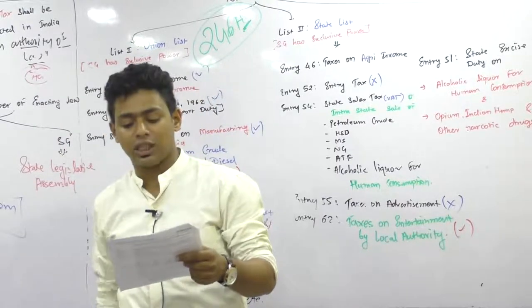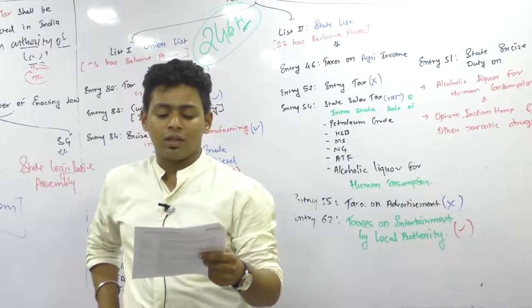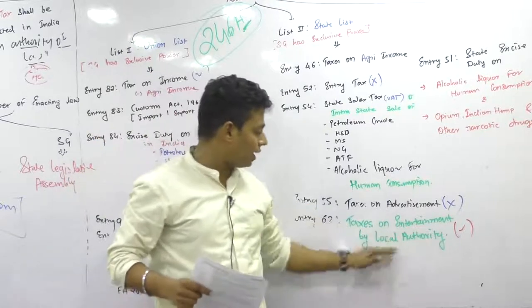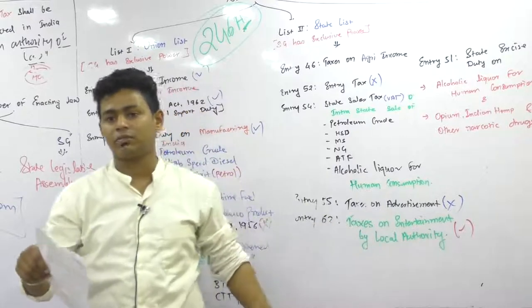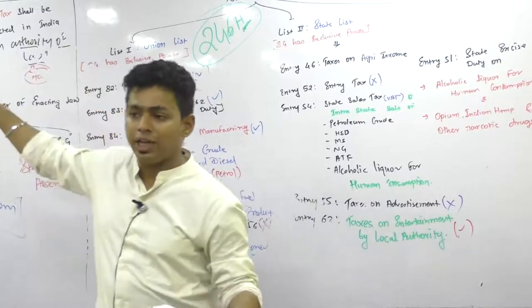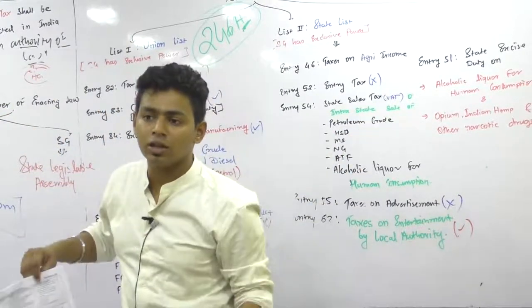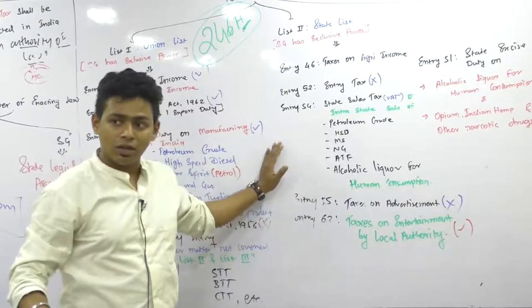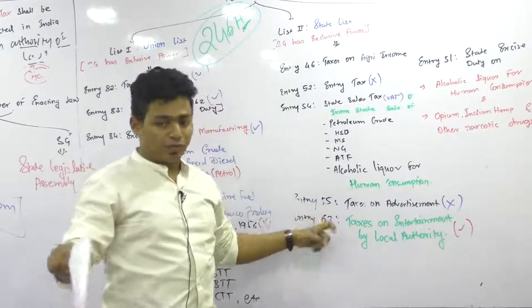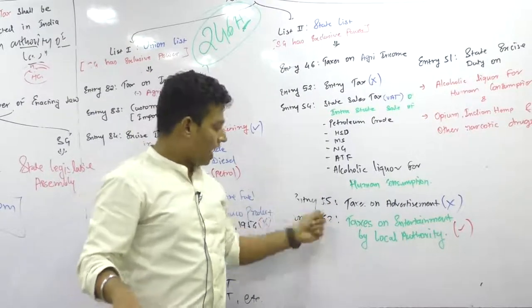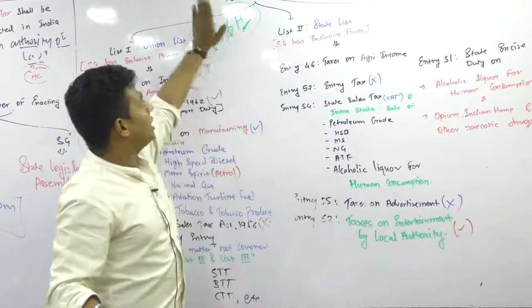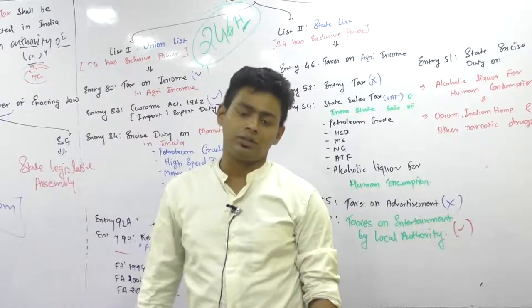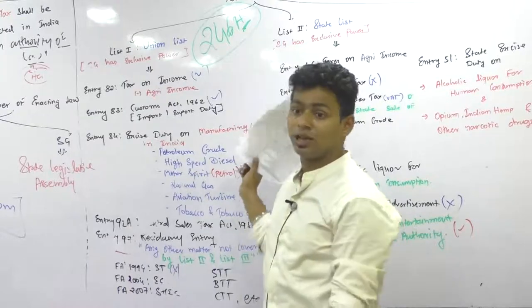In the state list, what is merged in GST? State surcharge and cess, entertainment tax, but except. Why, sir? Because still the constitution says taxes on entertainment shall be charged by local authorities. Other than this is merged with central. This is legal understanding. Everybody knows taxes subsumed in GST. You people should have legal understanding behind it. If somebody asks why local authority taxes are not merged with GST, tell them - Entry number 62 of state list, that is list 2 of 7th schedule of article 246, doesn't permit government to merge local taxes, local entertainment taxes in GST. It is still there. Legal understanding.